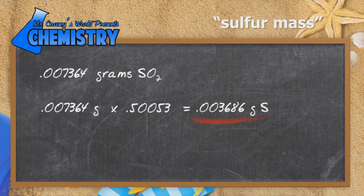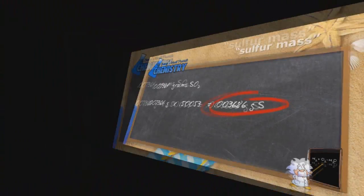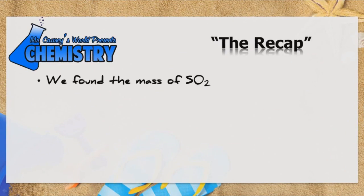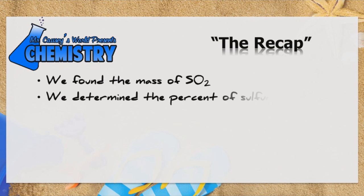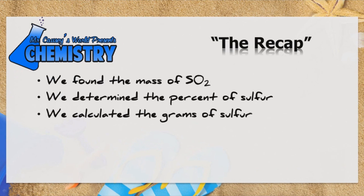Was it too difficult? You have to practice these to get good at them. We found the mass of sulfur dioxide, and in the process we found the mass of sulfur and oxygen. We determined the percent of sulfur in the sulfur dioxide, and we then calculated the grams of sulfur.